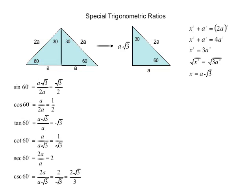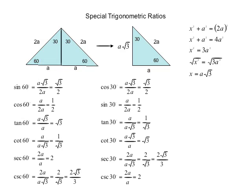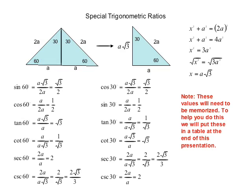You should rationalize the denominators in both of them, though it's not critical at this point. These were covered quickly, so you should stop and try to find these six basic special trig ratios for 60° yourself. We're going to do the same thing with 30°, so that would be good practice. Note these values will need to be memorized, and we will put them in a table at the end of this presentation.